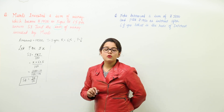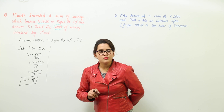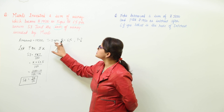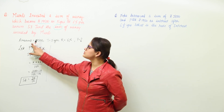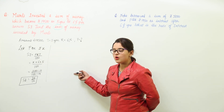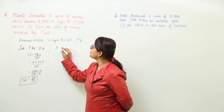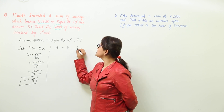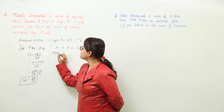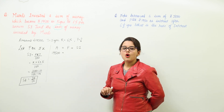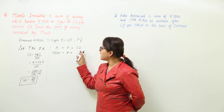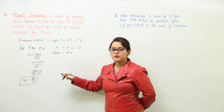But that doesn't solve the problem — I still need to find the principal. Notice that I have used time and rate, but not the value of amount yet. The amount can now be used to find the principal. We know that amount = principal + simple interest, so: 19,500 = x + 3x/10.